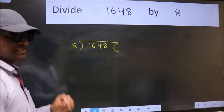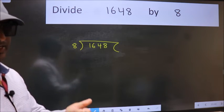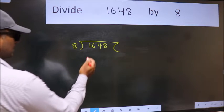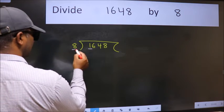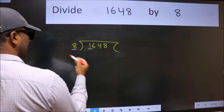This is your step 1. Next, here we have 1 and here 8. 1 is smaller than 8.